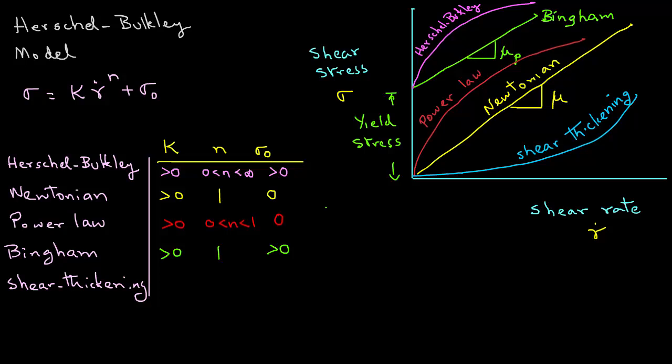And for shear thickening, or dilatant type liquids, the value of k is greater than zero, the value of n is between one and infinity, and the value for sigma zero is zero.